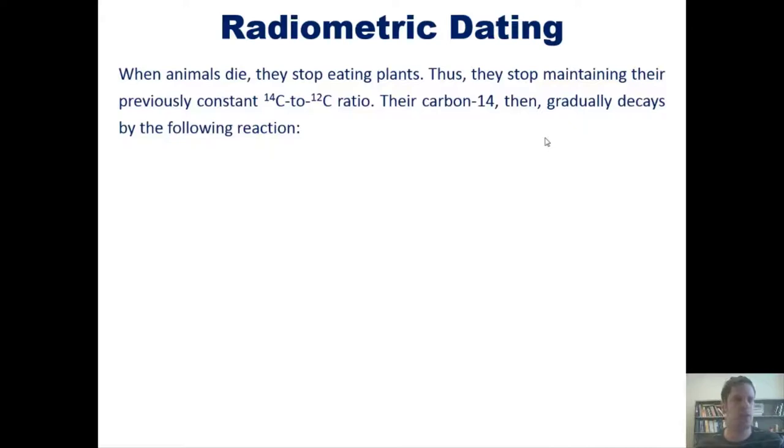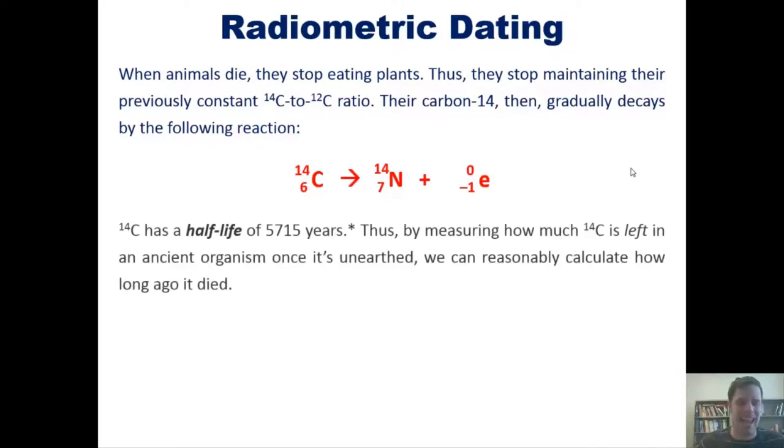When animals eat plants, or if they eat other animals that have eaten plants, they also incorporate the C14 into their bodies and consequently maintain roughly the same relative C14 to C12 ratio. So when animals die, they stop eating plants and thus stop maintaining their previously constant C14 to C12 ratio.